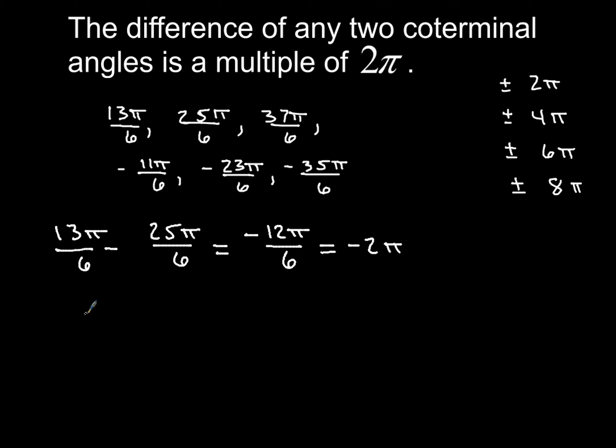Or say we took another one. Say we took our negative 11π over 6, and we subtracted, say, 37π over 6. We took those two angles. And we found their difference to be negative 48π over 6, which, when we reduce it, is just another multiple of 2π. In this case, it's negative 8π.